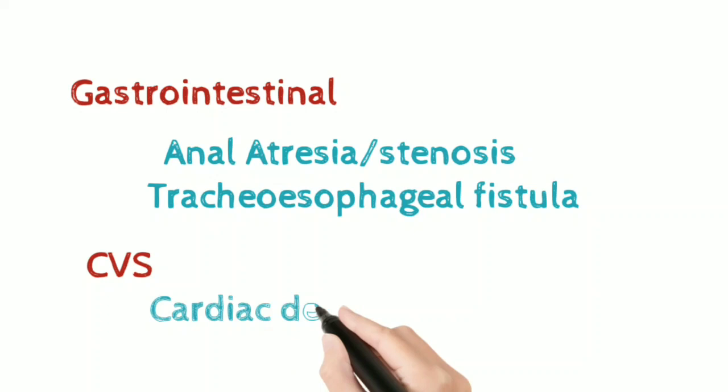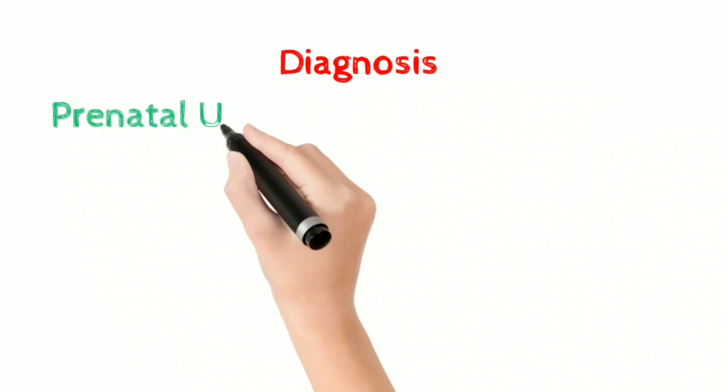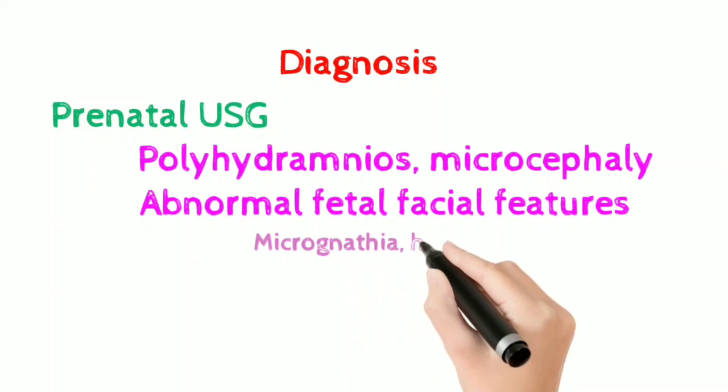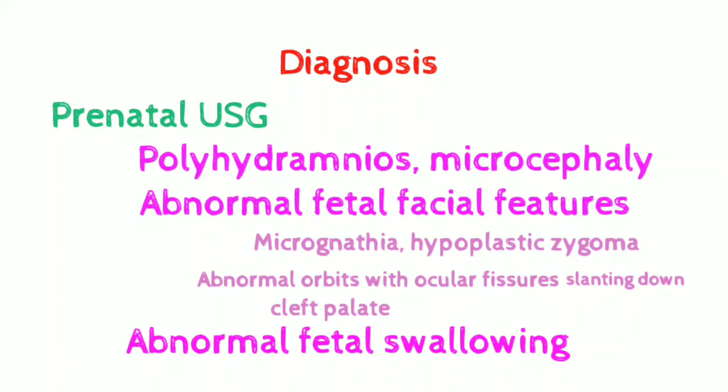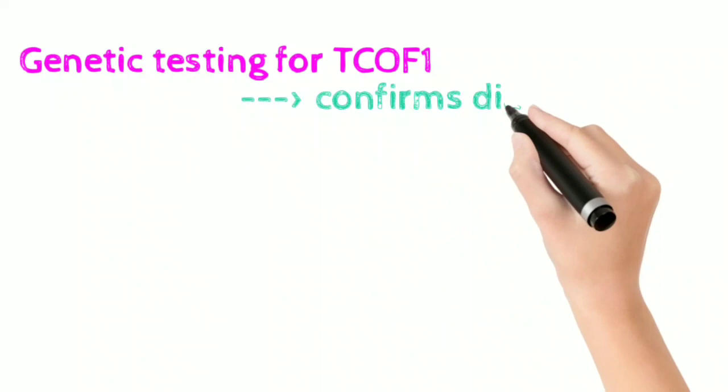Coming to diagnosis, prenatal ultrasonogram is a useful tool which may show polyhydramnios, microcephaly, abnormal facial features like micrognathia, hypoplastic zygoma, abnormal orbits with ocular fissures slanting downwards, and cleft palate. There could be abnormal fetal swallowing as well. In a suspected fetus, genetic testing may be done for TCOF1 mutation, which is diagnostic.